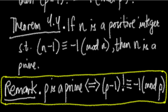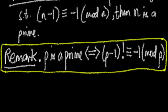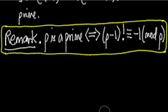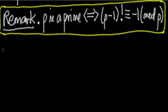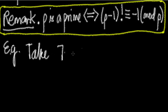This condition provides a seemingly simple test for primality of numbers. To check if n is prime, all we need to do is determine whether (n − 1)! is congruent to −1 mod n. For example, let's take 7. We know 7 is prime, but we'll verify it using Wilson's theorem.